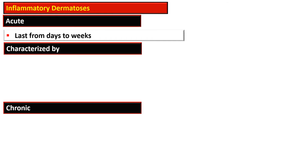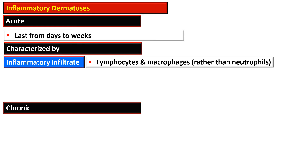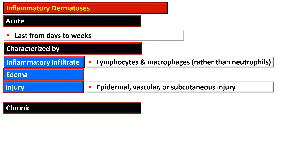Acute lesions are characterized by the presence of inflammatory infiltrate, edema, and injury. The inflammatory infiltrate in these acute inflammatory dermatosis consists of lymphocytes and macrophages, as compared to other acute inflammations where we usually get neutrophils.